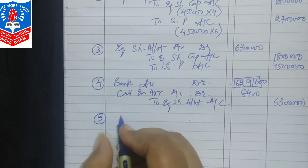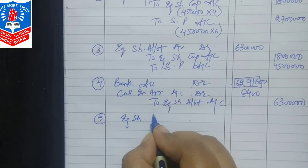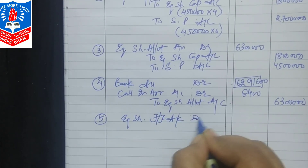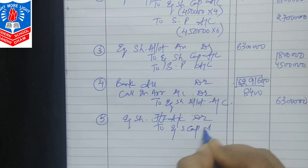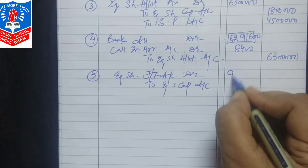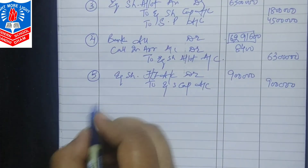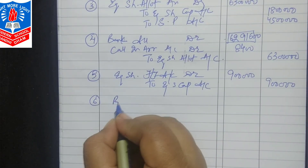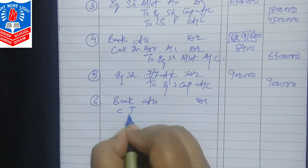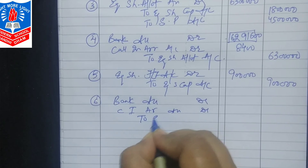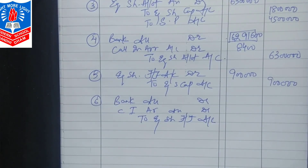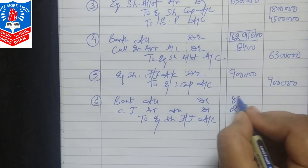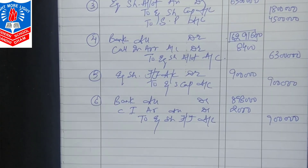Next, demand for first and final call: equity share first and final call account debit, to equity share capital account. No premium here, so directly to capital. Rs. 2 per share on 4.5 lakh shares = Rs. 9 lakhs demanded. But 1,000 shares (Abdul 600 + Haroon 400) did not pay — that is Rs. 2,000 not received. Entry: bank account debit, call in arrears account debit Rs. 2,000, to equity share first and final call account. Amount received = Rs. 8,98,000.